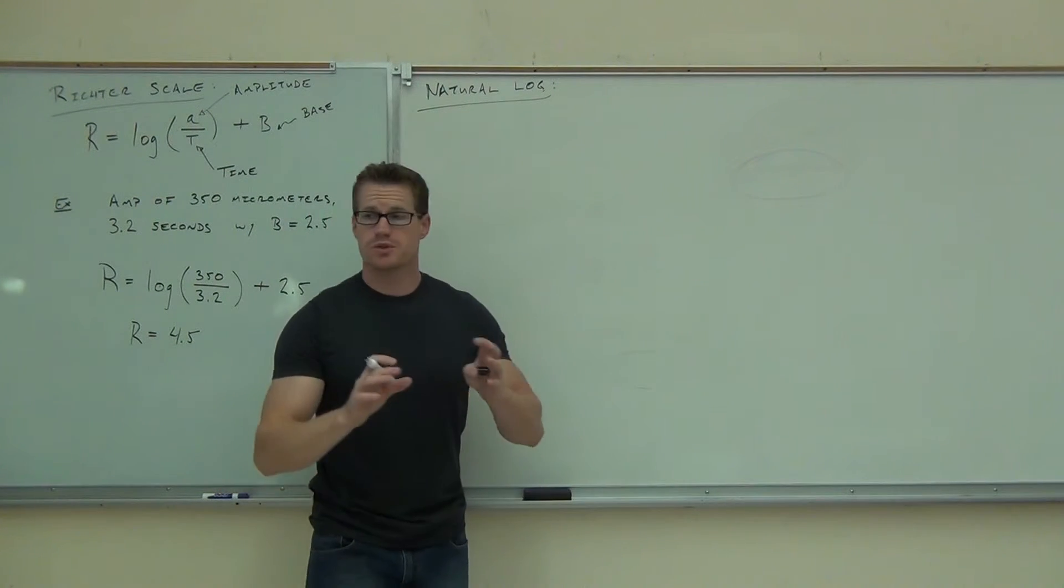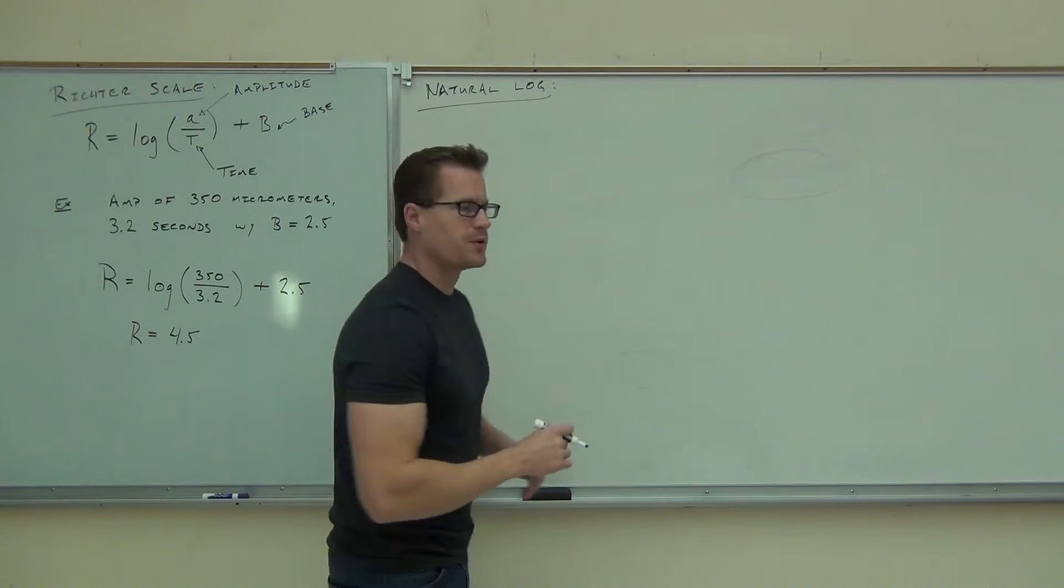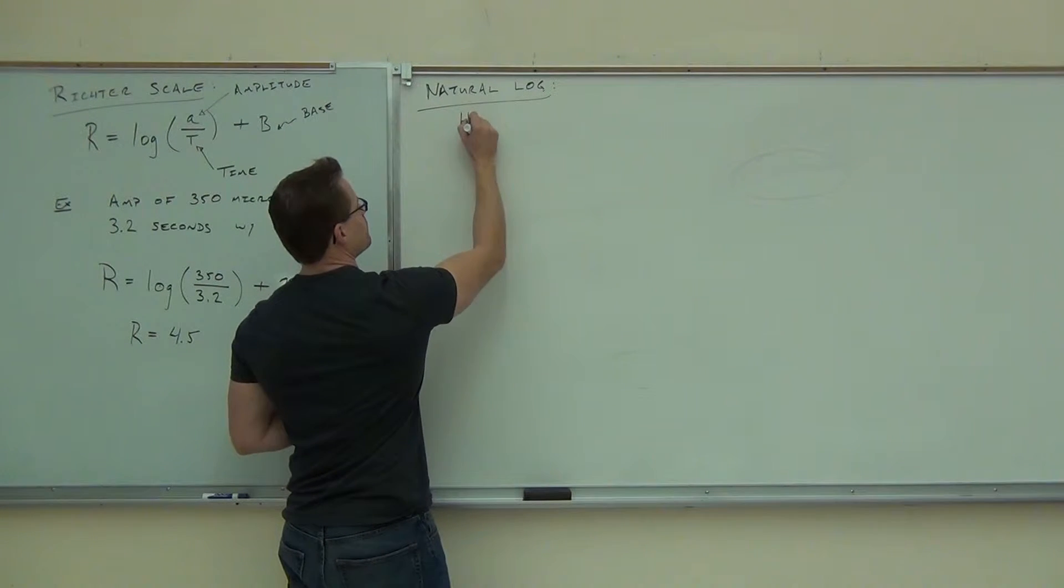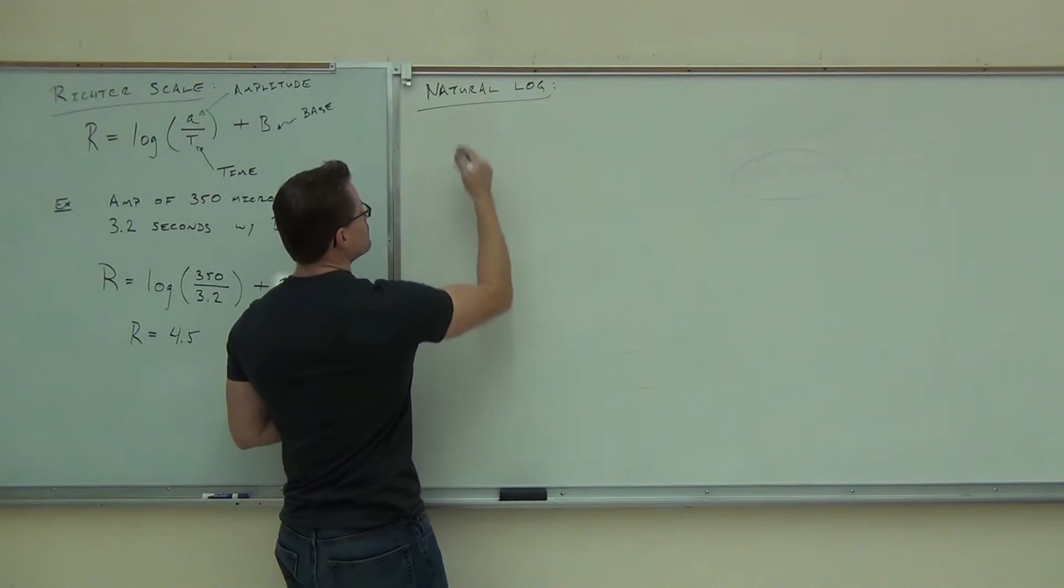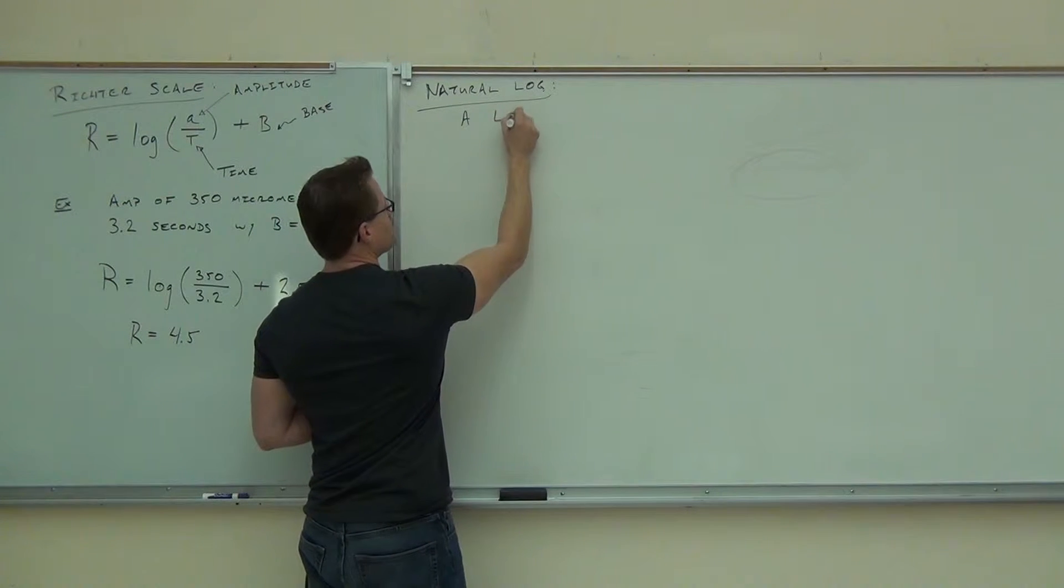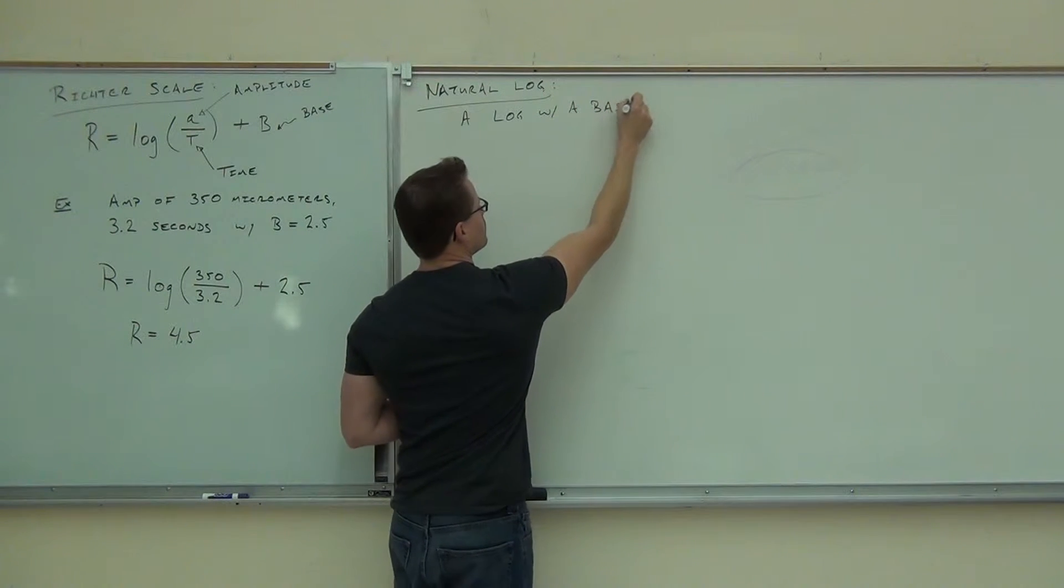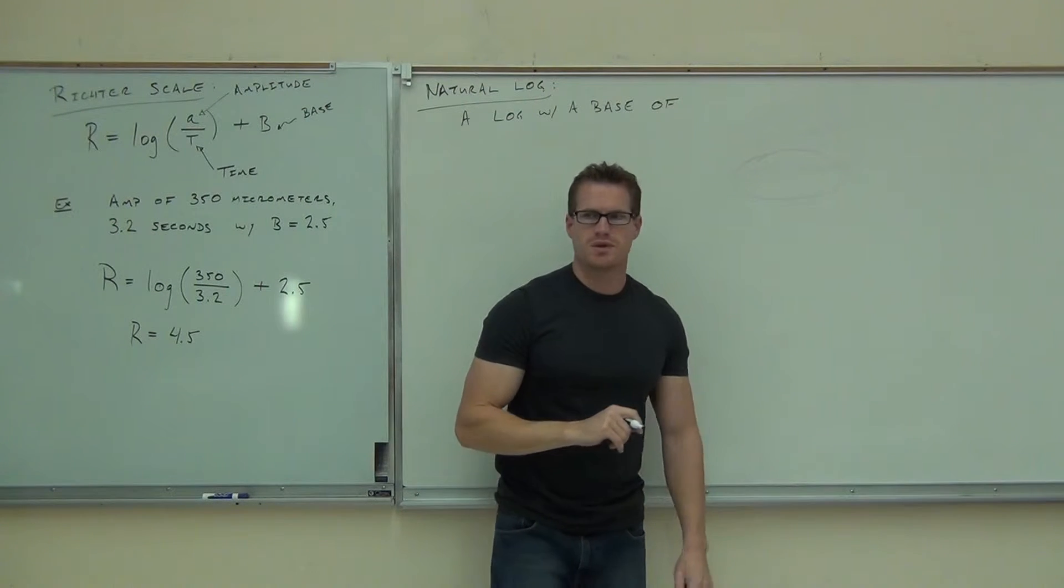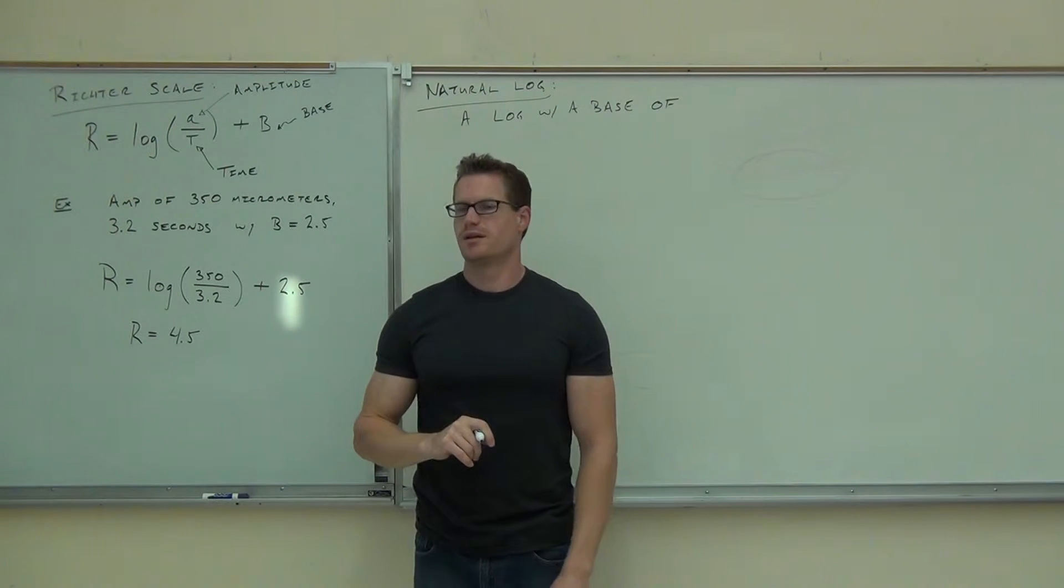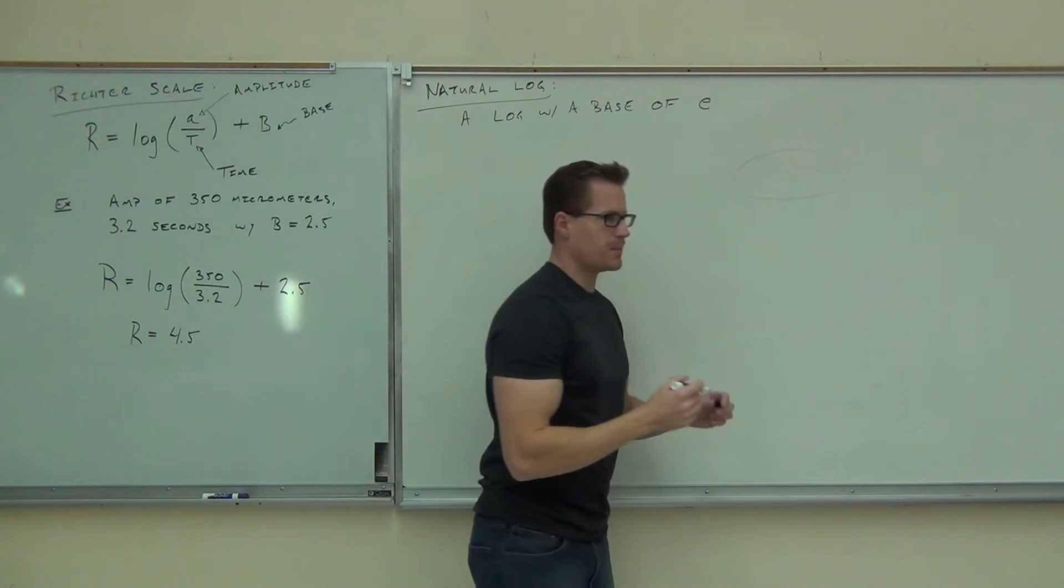A natural log is simply a logarithm, so it works the exact same as every log, except it has a base of, oops, we'll say a logarithm with a base of, not 10, not 2, not 3, E. A base of E.